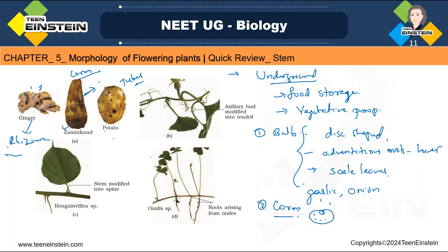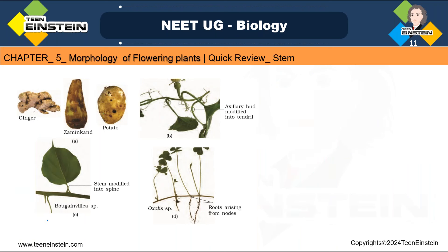Potato is the example for tuber. It doesn't have a particular shape but has a swollen body, and randomly it will be having what we call 'potato eyes' — those are the sprouting portions. So potato is the best example for tuber.